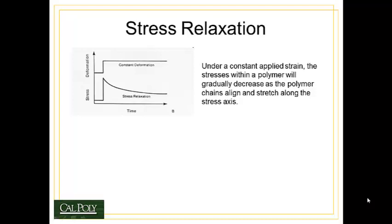Under a constant applied strain, the stresses within a polymer will gradually decrease over time as shown by this figure. You can see that when the deformation or strain is initially applied, we get a sudden increase in the stress of the polymer, and then as that strain is held constant, the stress gradually diminishes. This is a phenomenon known as stress relaxation, and it's caused by chain alignment and rotation that reduces the strain and therefore the energy in the system, reduces the stress.